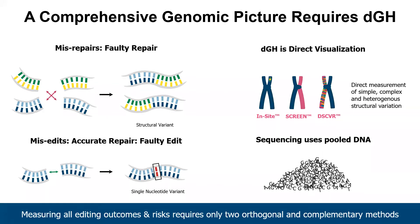DGH and sequencing measure different things and are complementary and orthogonal techniques. DGH is a single-cell technique and captures structural and cellular context that is lost by analyses of pooled DNA that rely on bioinformatic reconstruction and prediction of structure. Sequencing is great for the analysis of edits at the base pair level and for measuring rates of off-target errors, but it is not the right tool for determining heterogeneous, generally low levels of structural variants that result from misrepair of DNA double-strand breaks from any source.